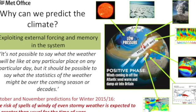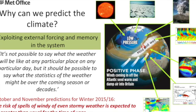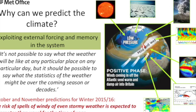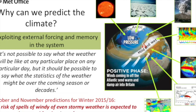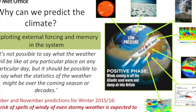Around the side of the diagram are all the factors that scientific research and analysis have shown to influence what sort of winter we'll have: the 11-year solar cycle, the state of the Arctic, El Niño in the Pacific Ocean, and so on.